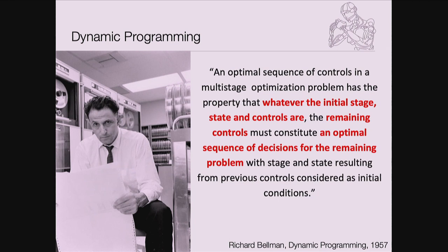In simple terms: if you know what's happening tomorrow, you can optimize today. You do one optimization step over all possible futures, then go backwards, and you don't need forward-and-backward passes. This is a core difference from optimal control before Bellman — which used variational calculus requiring forward and backward passes along a differential equation. The Bellman principle and its generalization, the Hamilton-Jacobi-Bellman equation, allow you to just go backwards in time for efficient solutions. This is a key breakthrough.